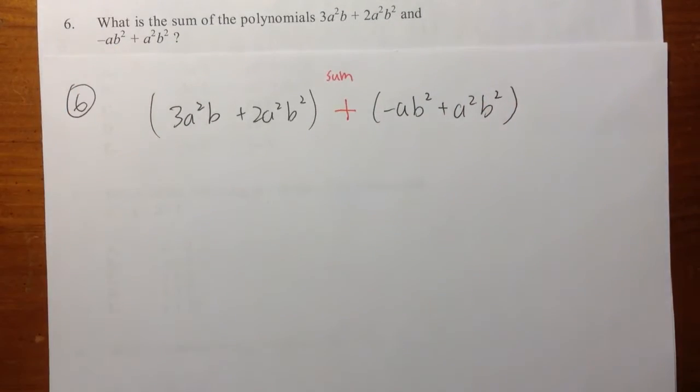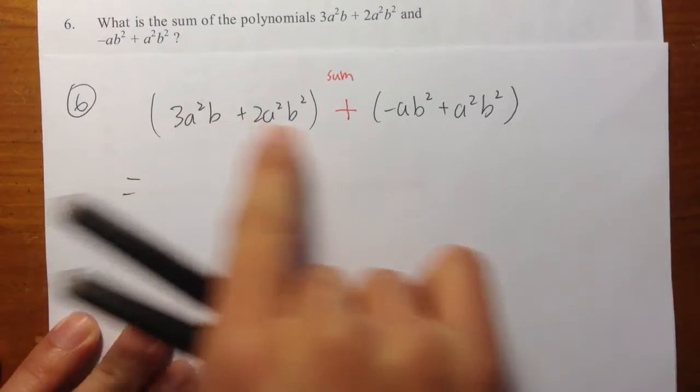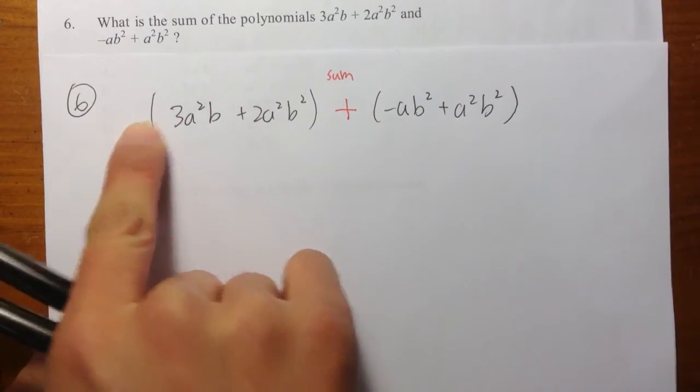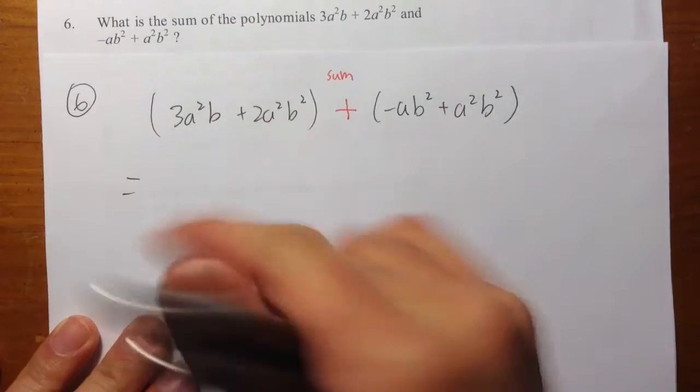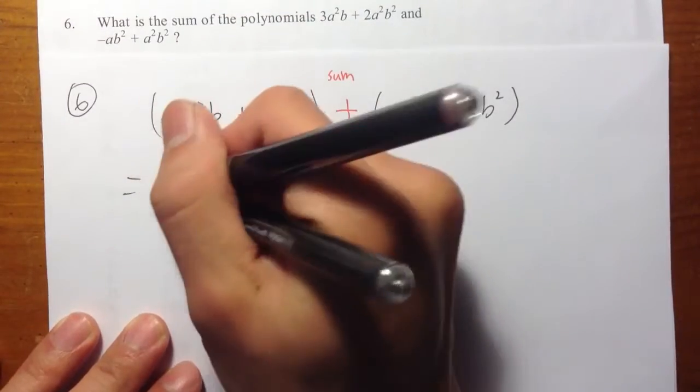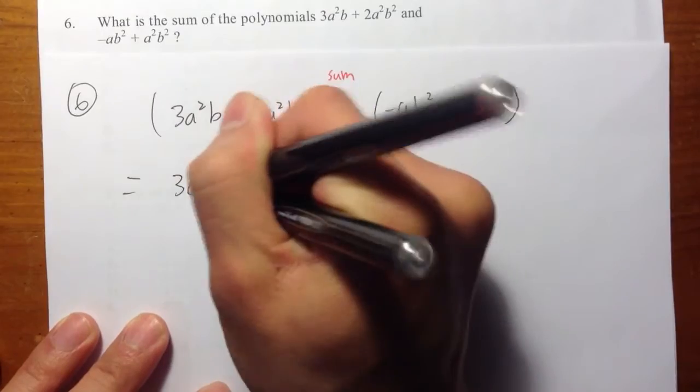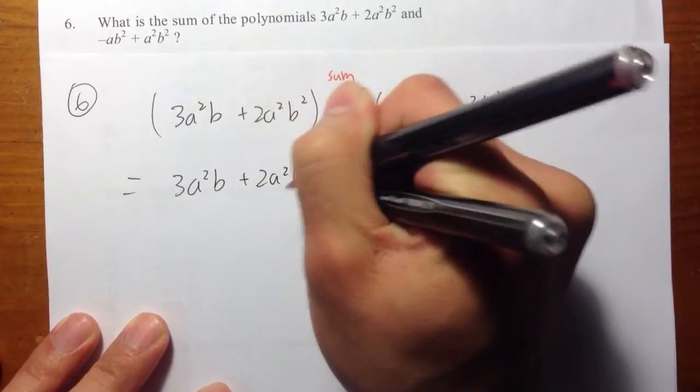Okay, so let's just get to work. Pay attention to the parenthesis. There's nothing in front of this parenthesis, so this parenthesis doesn't really matter. I can just take out the parenthesis and say this is 3a²b + 2a²b².